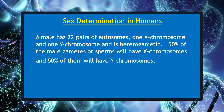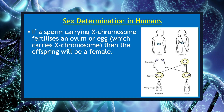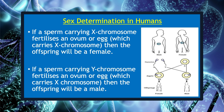A male has 22 pairs of autosomes, one X chromosome and one Y chromosome, and is heterogametic. 50% of the male gametes or sperms will have the X chromosome and 50% will have Y chromosomes. The sex of a child depends upon what happens at fertilization. If a sperm carrying X chromosome fertilizes an ovum carrying X chromosome, the offspring will be female. If a sperm carrying Y chromosome fertilizes an ovum carrying X chromosome, the offspring will be male. Hence, it is the sperm which determines the sex of an offspring.